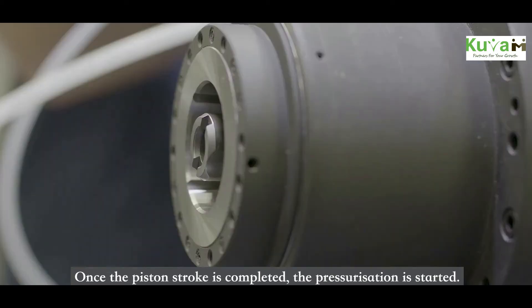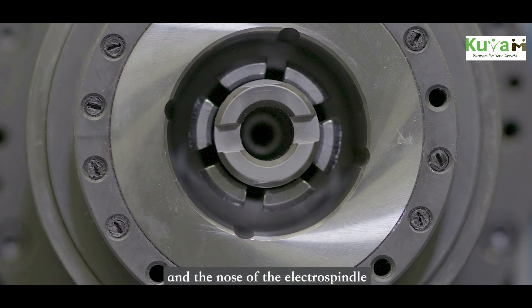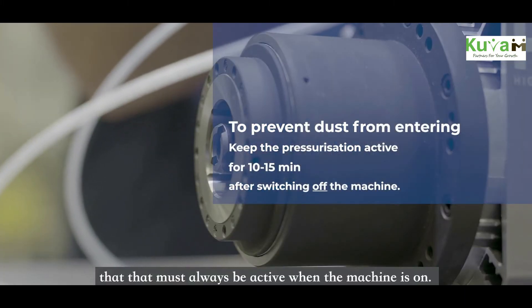The pressurization is a continuous air jet that seals the mechanical seals between the front ring nut and the nose of the electrospindle. That must always be active when the machine is on.